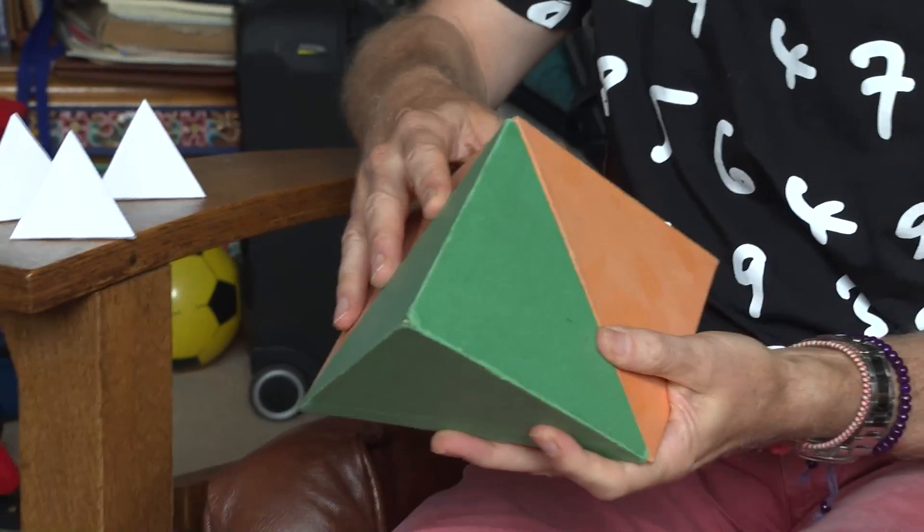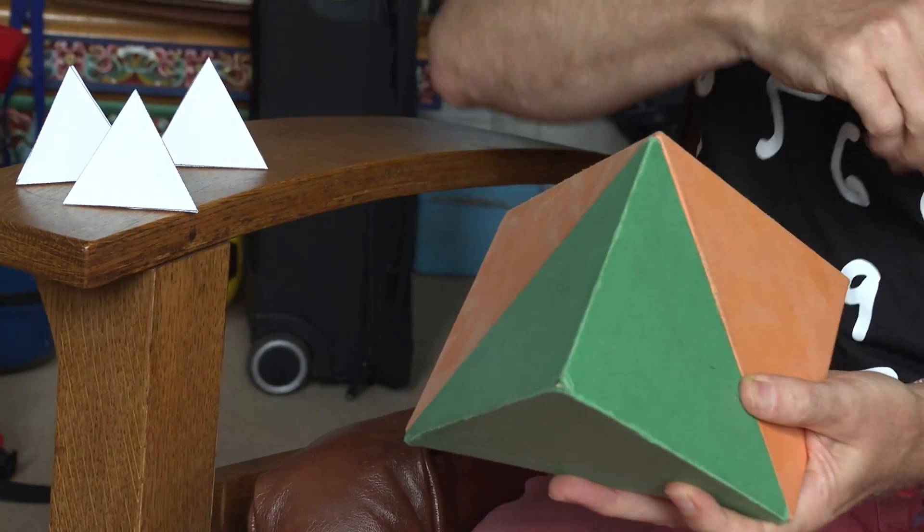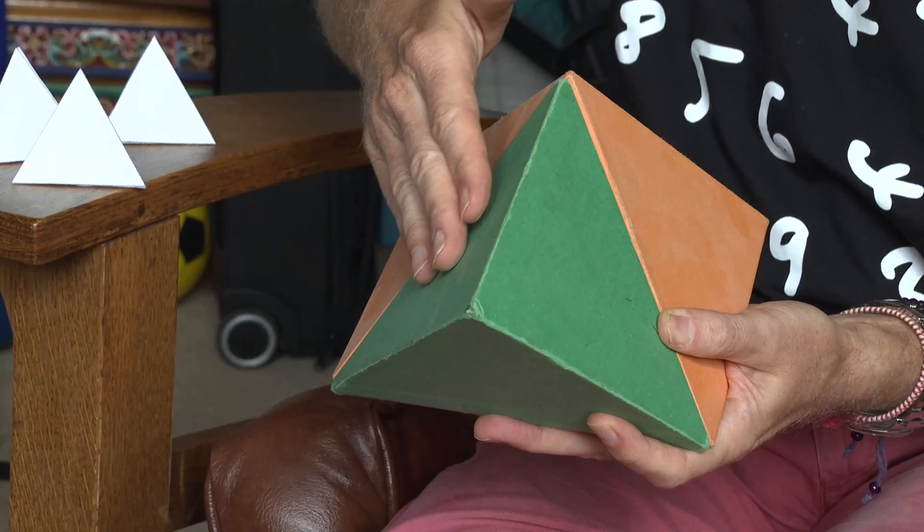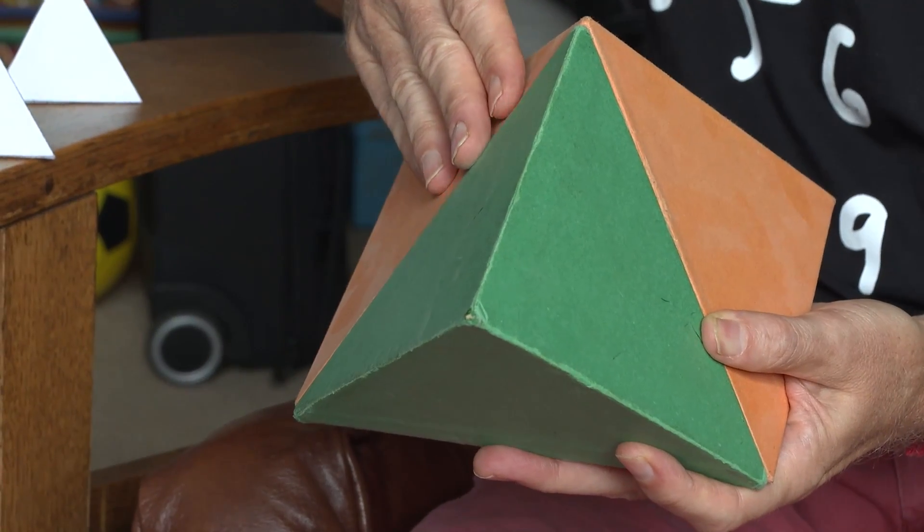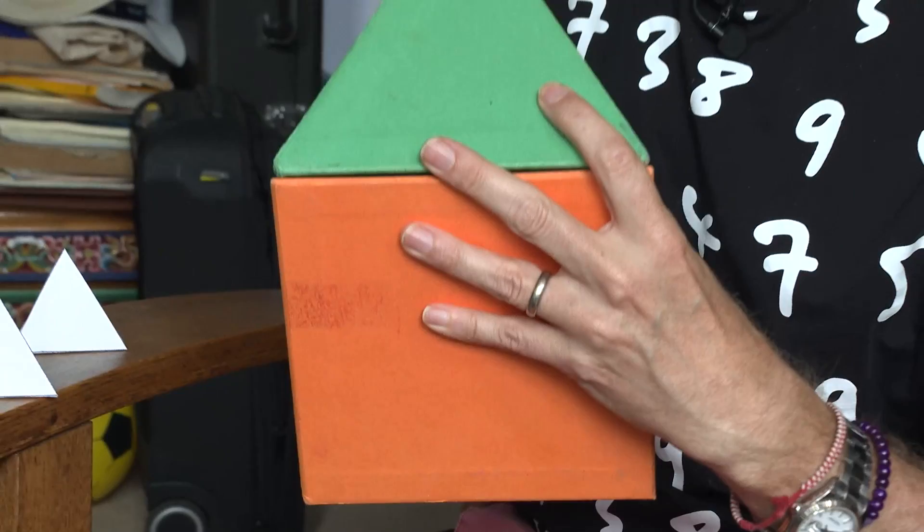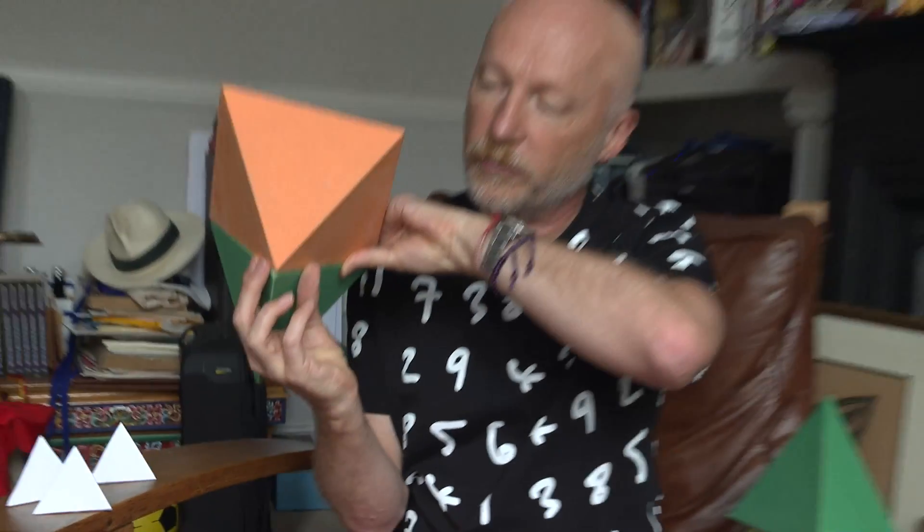But actually it turns out rather curiously that when you put these together, this shape actually only has five faces. In this shape you've got two faces on this side and two faces on this side that fuse. So actually we have this, which you might have first thought counted as two different faces. You've got one, two, three, the square on the bottom and the last triangle there five.